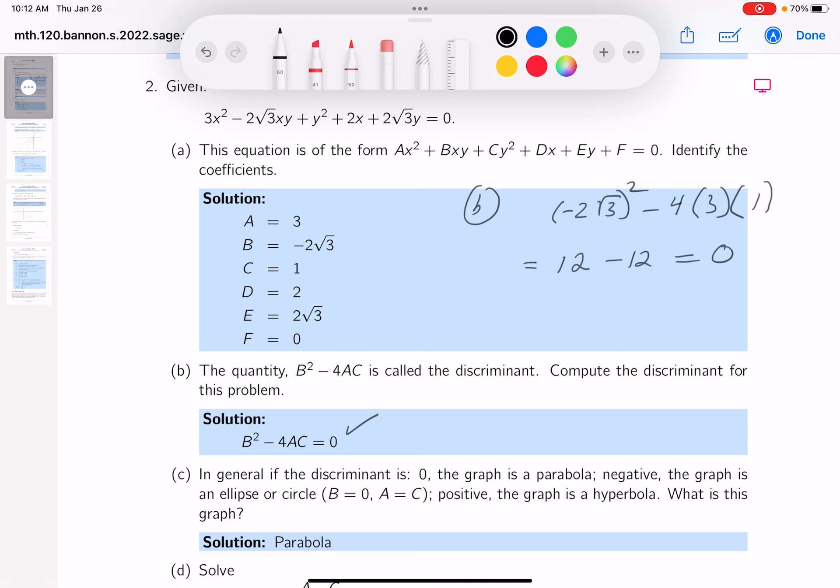Well, I just read it. It said it right over here. In general, the discriminant is 0. It's going to be a parabola. Got it? We got the parabola. This is good.